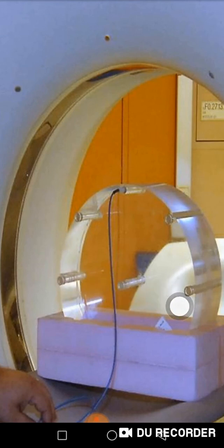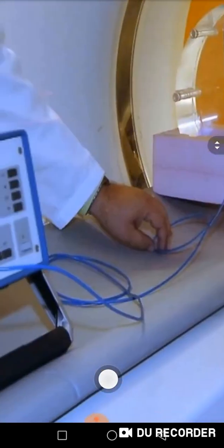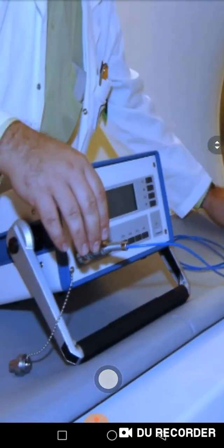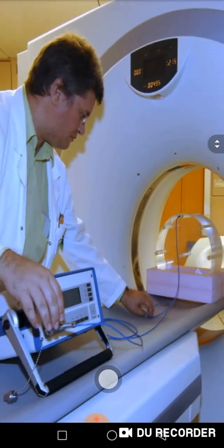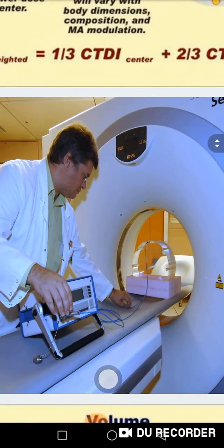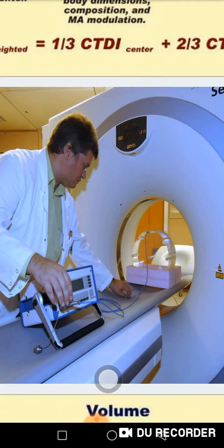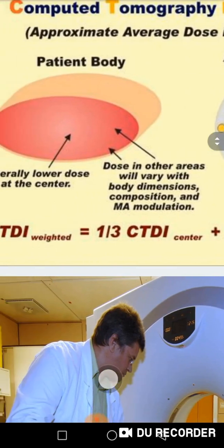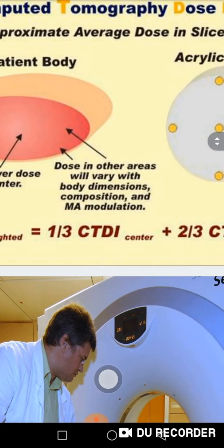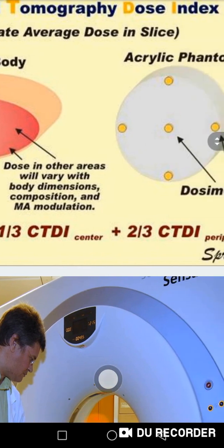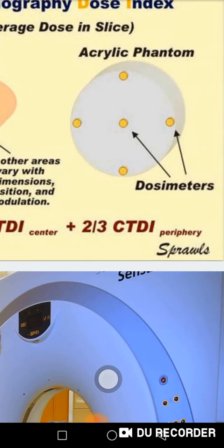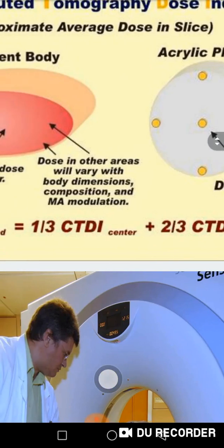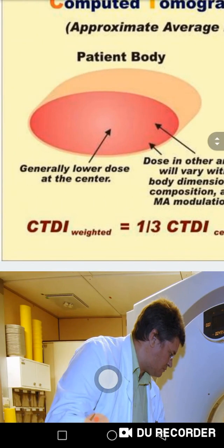I connect the ionization chambers to the monitor to measure the dose that will come to these parts. I adjust my machine to a specific milliampere and certain parameters to see how much dose reaches this phantom, which represents the patient. Through this equation, the weighted CTDI index is one-third of the central dose plus two-thirds of the peripheral dose — giving you the weighted CTDI index.